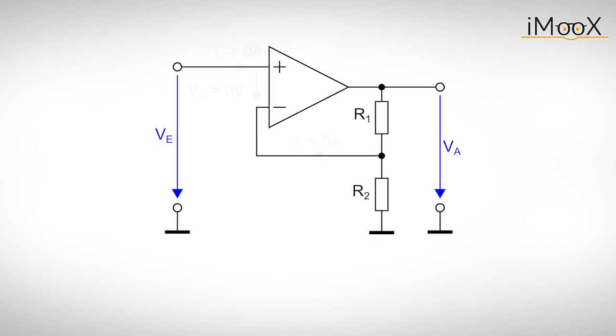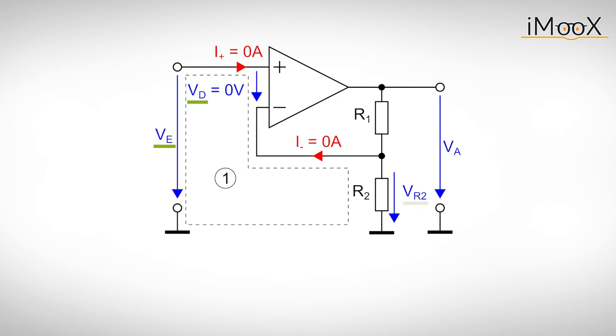We start off by applying the two rules from before. Now we can relate the input voltage, the differential mode voltage, and the voltage drop on resistor R2 according to loop 1. Since VD is 0 volts, the voltage drop on R2 equals the input voltage. This allows us to determine the current flowing through R2. With I- being 0 amps, the currents through both resistors are equal.